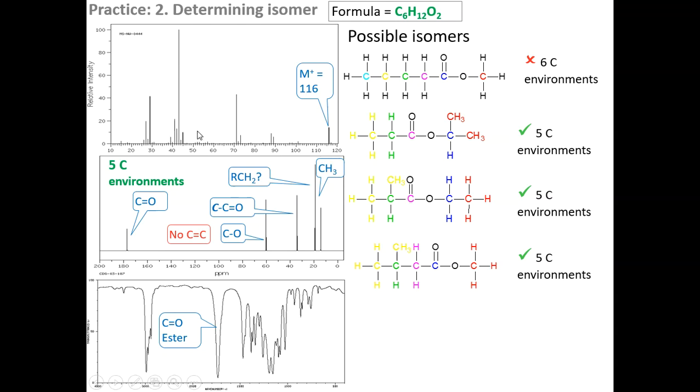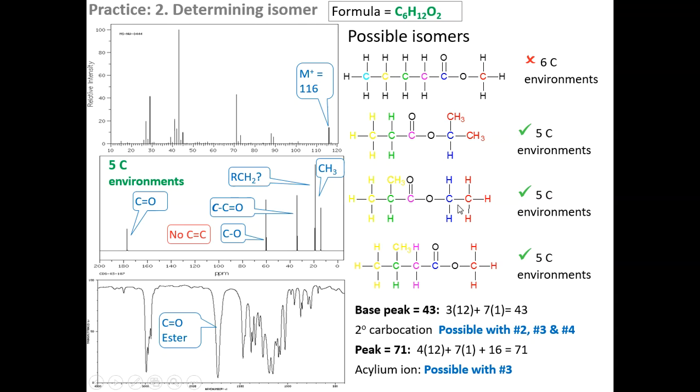So if you look at the mass spec, the base peak is 43, and that is a three carbon fragment, and that's possible with all of these three. Because if you have a look, these are three carbon fragment of 43, here is our three carbon fragment of 43, and here is our three carbon fragment of 43, so that doesn't really help. All of them can do it.